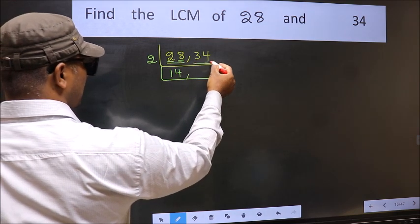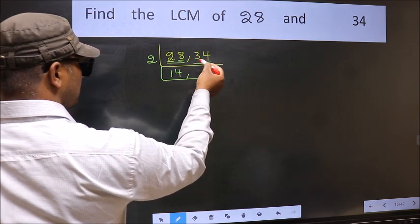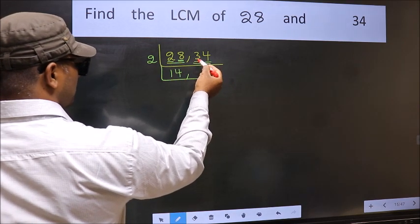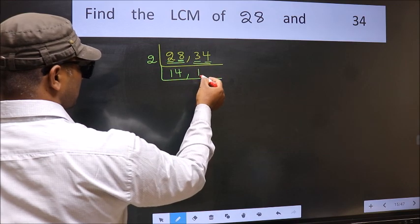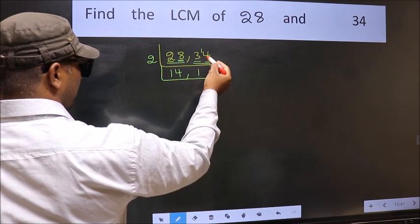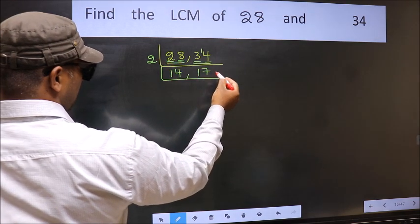Now the other number 34, last digit 4, even, so this is divisible by 2. First number 3, a number close to 3 in the 2 table is 2 times 1 is 2. 3 minus 2 is 1, 1 carried forward makes 14. When do we get 14 in the 2 table? 2 times 7 is 14.